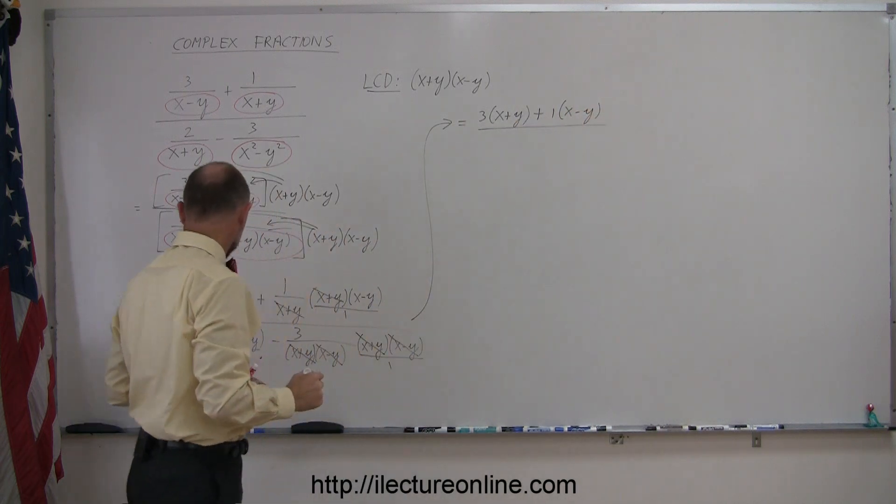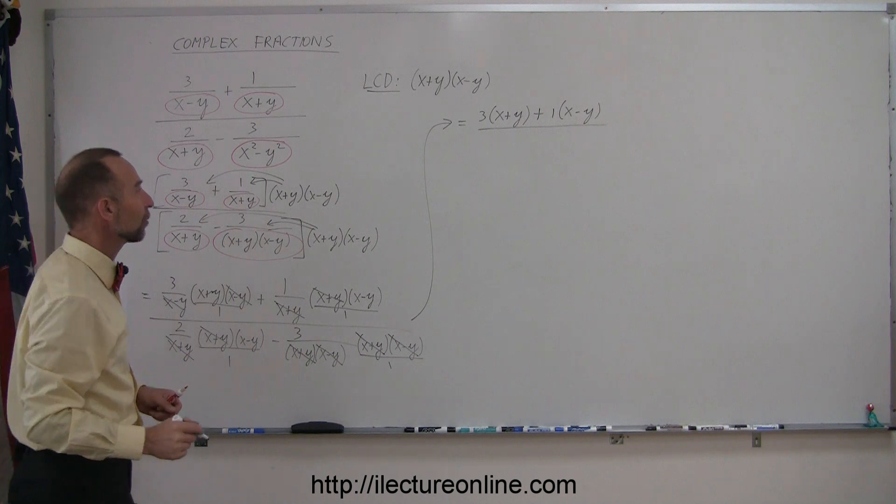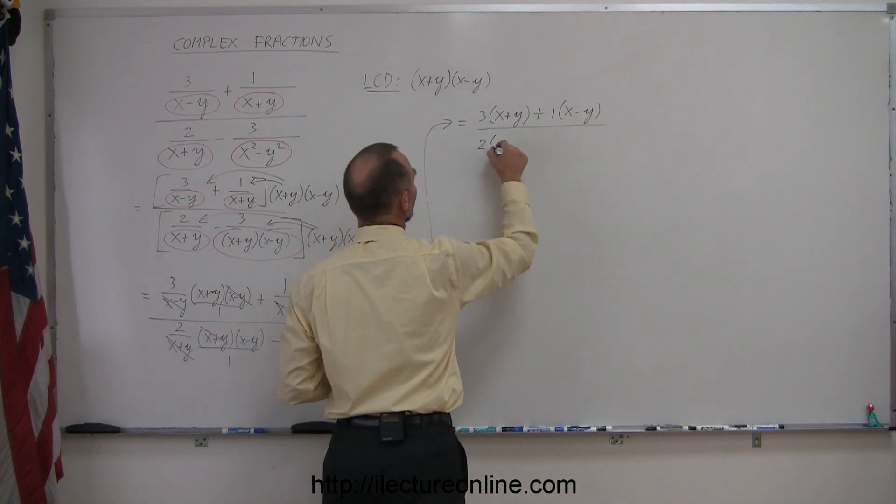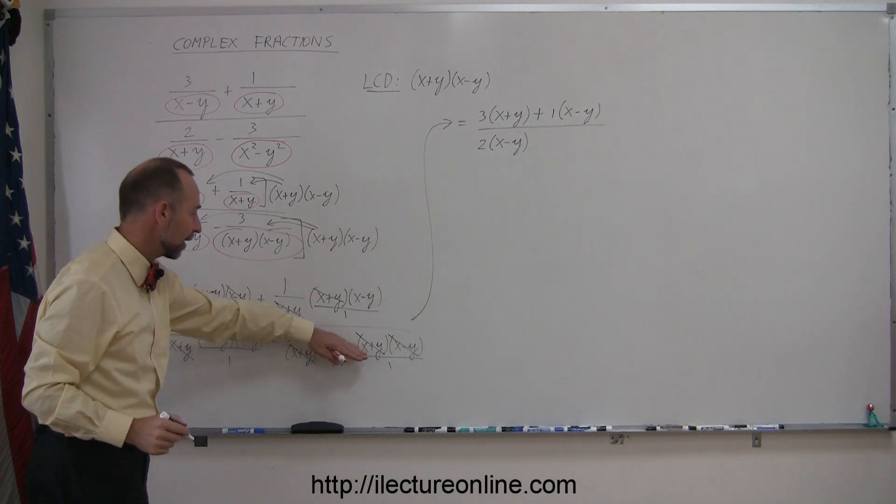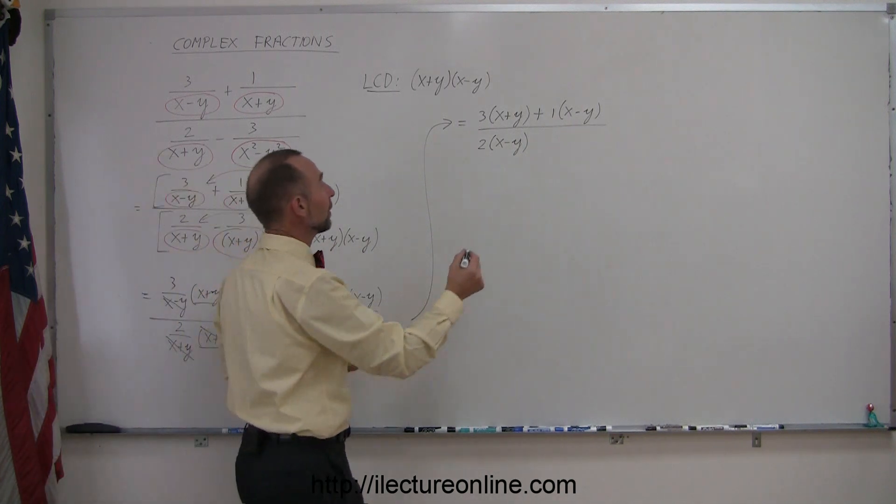In the denominator, we have a 2 times x minus y left. And here we have a minus 3, and since that is canceled out with that, we just have simply the minus 3 left.